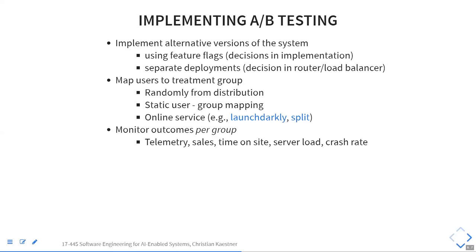You also need to figure out which user is in which group, or which translation was done with which model. You typically need some persistent mapping — some file that says these are the users in my B group. You can pick them randomly, but you want to remember this. It's fairly weird for a user if they reload the page and see a different version each time, especially for visual things. So you typically keep them in the same group.